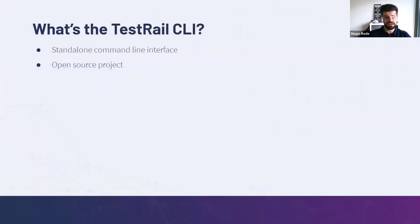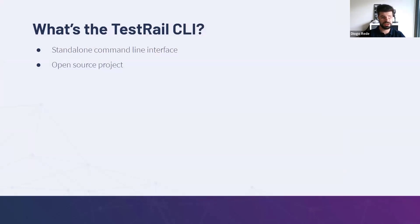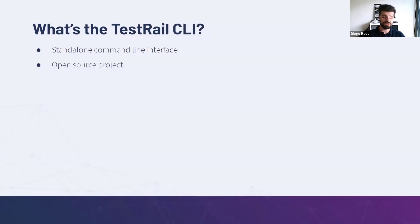What's the TestRail CLI? The TestRail CLI is a standalone command line interface — a text-based interface for users. Like you can interact with your operating system, you can also interact with the CLI. And it's an open source project, which means everyone is welcome to contribute and able to download the code and customize it for themselves if they wish to.